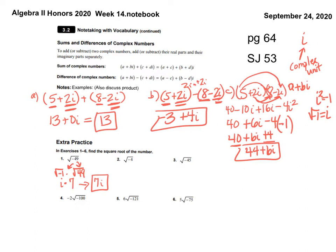For question 2, the square root of negative 1 times the square root of 4. The square root of negative 1 is i, and the square root of 4 is 2. i times 2 is 2i.